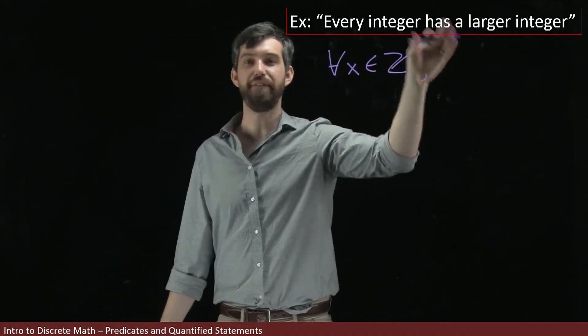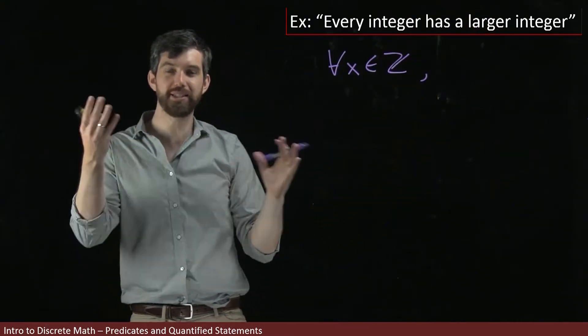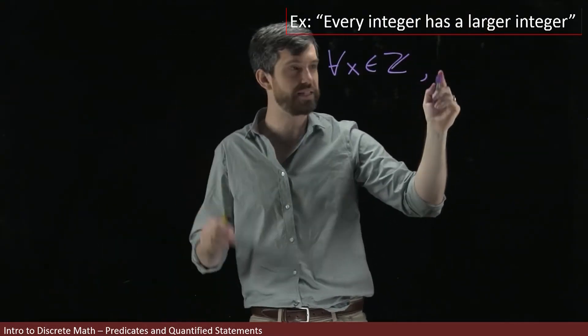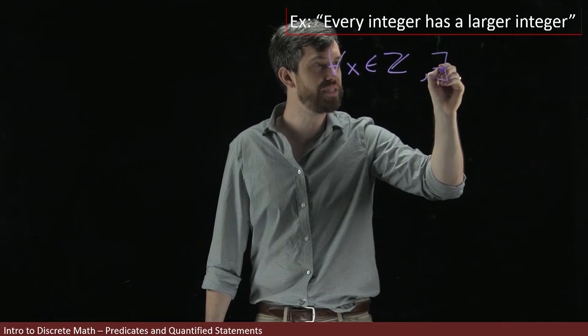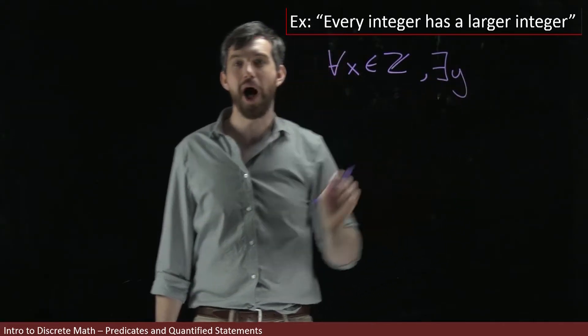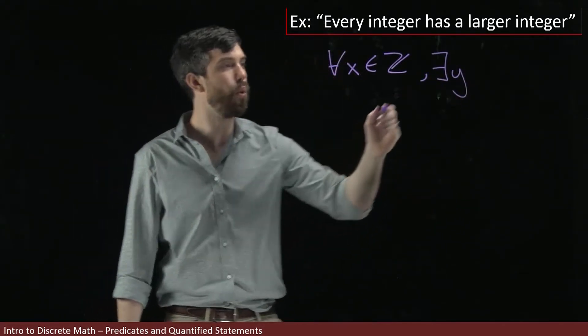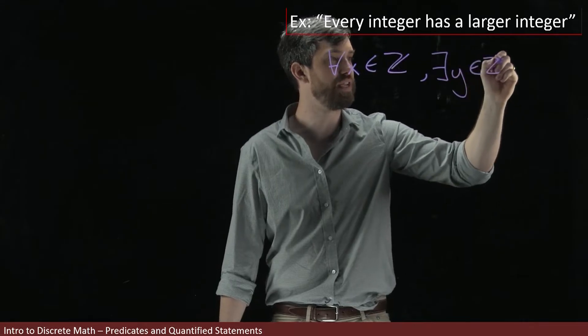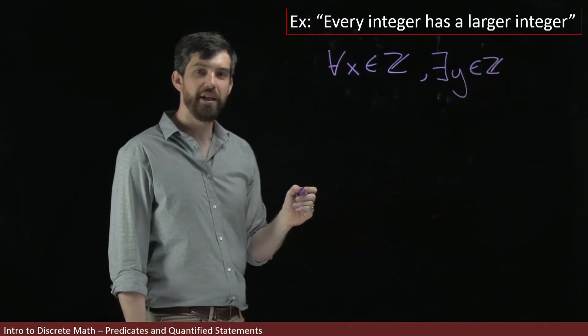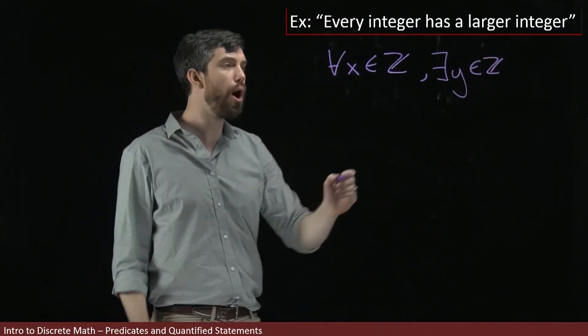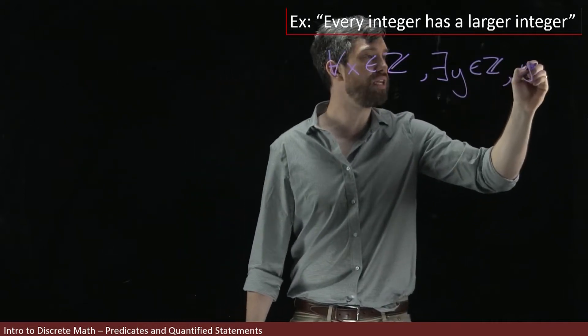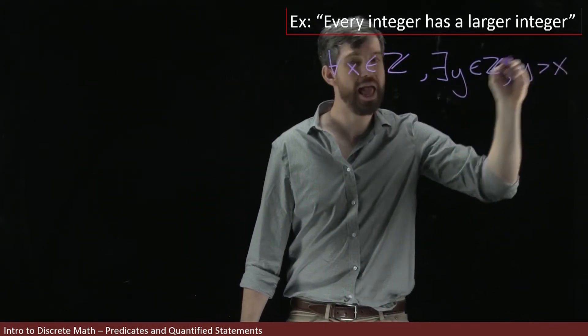So instead of just putting a p of x and having it as one property, I can expand that p of x like this. I can say that there exists some y, so some other integer, so this y is also going to live inside of the integers, that has the following property. The y is a larger number than x.